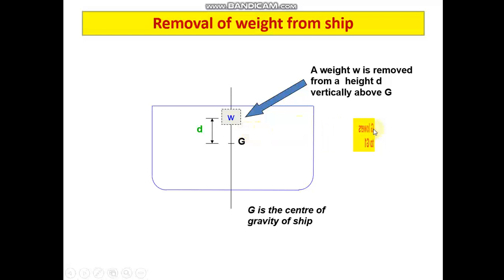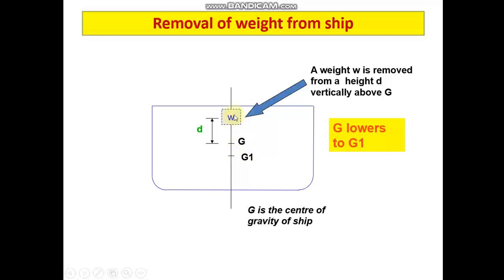Because of this removal of mass, there will be a shift in center of gravity from G to G1. This G1, the new position of center of gravity, will be located away from the position of w, because this is a scenario of removal of mass. When we remove mass, the center of gravity will shift directly away — geometrically away — from the position from where the mass has been removed. GG1 can be calculated by the formula derived earlier: w into d by W minus w.